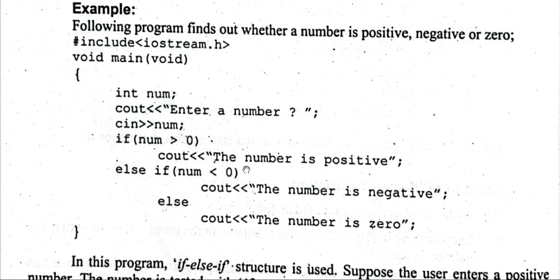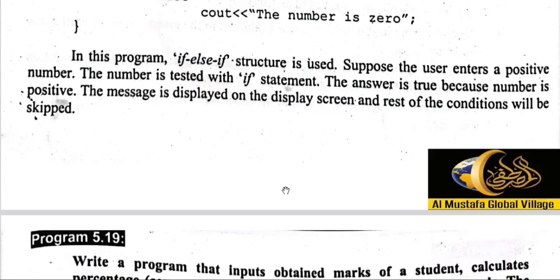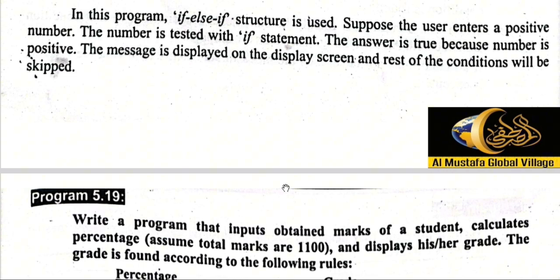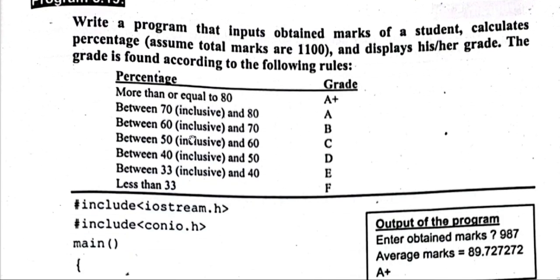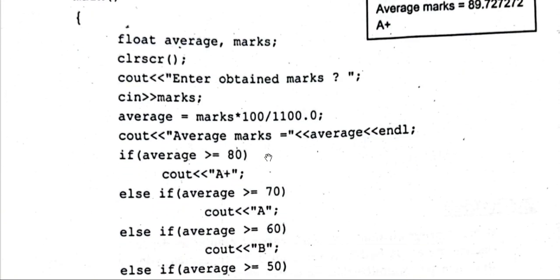For example: ایک نمبر input کرنا ہے اور بتانا ہے کہ وہ نمبر zero سے بڑا ہے، چھوٹا ہے، یا برابر ہے۔ اگر zero سے بڑا ہے تو positive print کرے گا، دونوں conditions true نہیں ہیں تو وہ نمبر zero ہے۔ یہ if-else-if کے ذریعے ہی ہم grades find کرنے والا program بھی بناتے ہیں۔